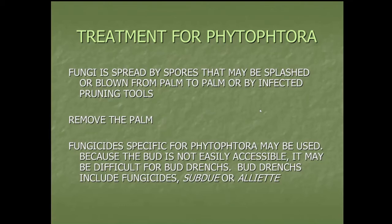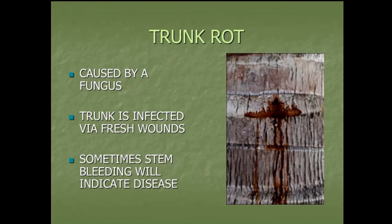Trunk rot is another fungal issue, typically caused by putting a nail in your palm tree — for example, hanging Christmas lights with a nail. You'll often see a bleeding look on the trunk that tells you there's trunk rot. You might try pouring a fungicide in that area and letting it run down the trunk, but this may not save your tree. It will make your tree less stable and less attractive.